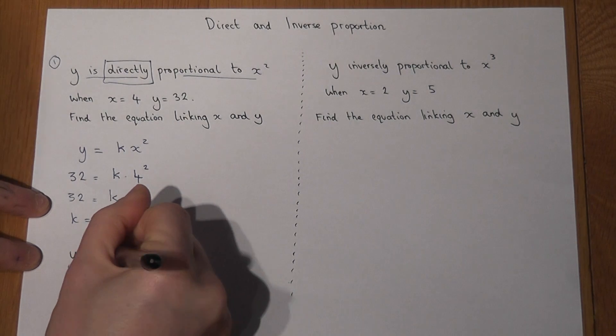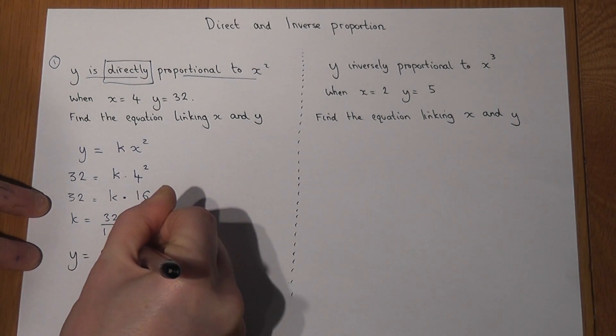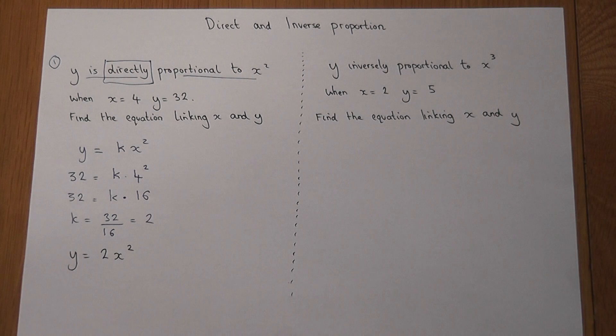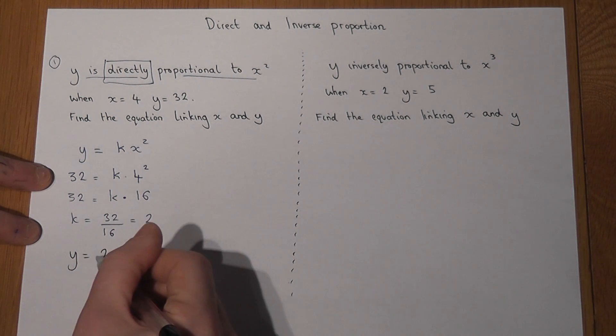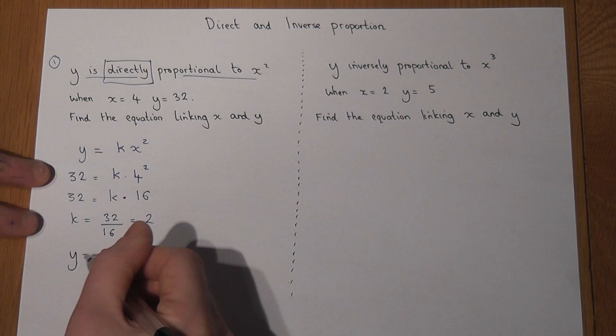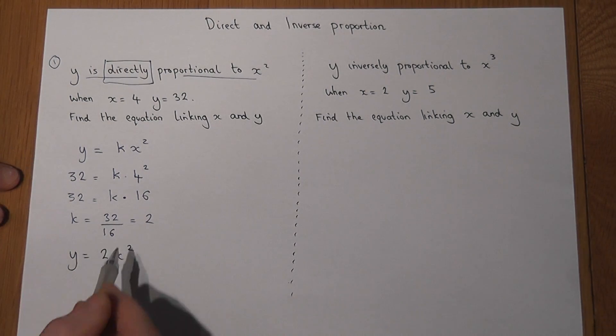So for example, if we're told x is 5, I can find y. 5 squared is 25, times by 2 is 50, and that is the equation linking x and y.